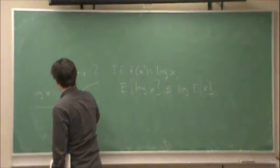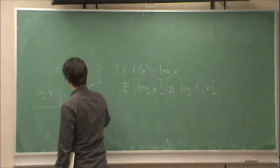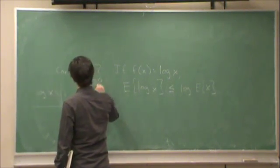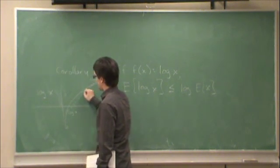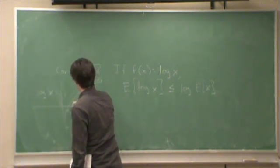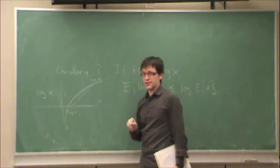So, we can see that here. Let's draw the connecting lines. Here's log x1, log x2. The expected value of the logs lies along that line, whereas the value of logs always lies above that expectation.